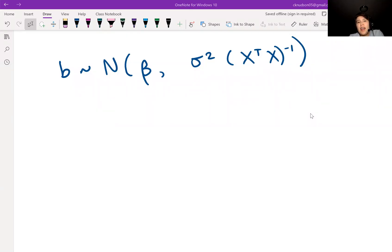In the previous video, we looked at the estimator B, and we saw that it has a normal distribution with mean beta and variance sigma squared times X transpose X inverse.